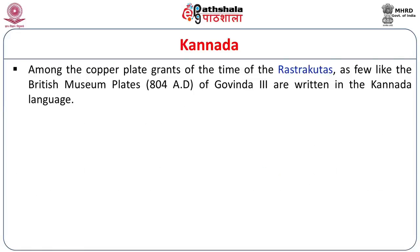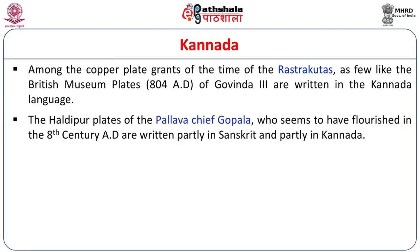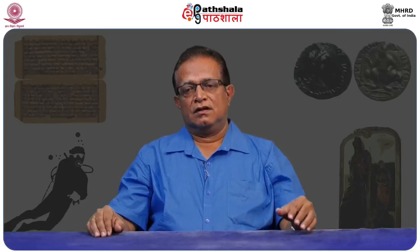Among the copperplate grants of the time of the Rashtrakutas — another very important dynasty that held sway over large parts of Karnataka and parts of the Deccan — apart from Sanskrit, we have some Kannada charters also. Among them, the important one is the grant from the British Museum, the record of Govinda III, written in Kannada language. The Haldipur plates of Pallava chief Gopala, who flourished in the 8th century, are written partly in Sanskrit and partly in Kannada. They used the local language for the benefit of the local populace so that they could understand and appreciate the grant.